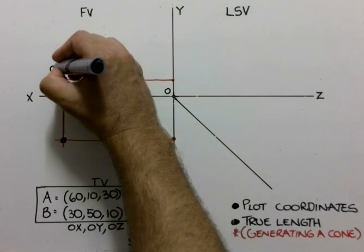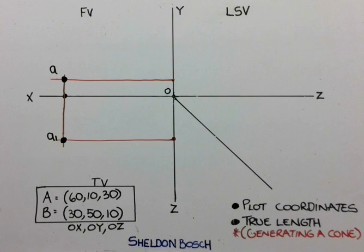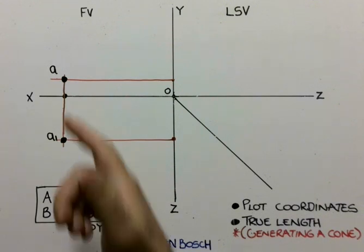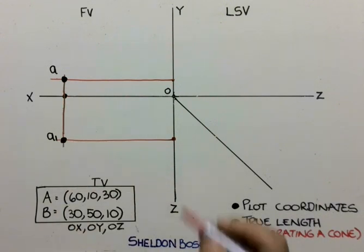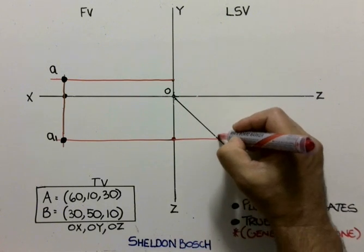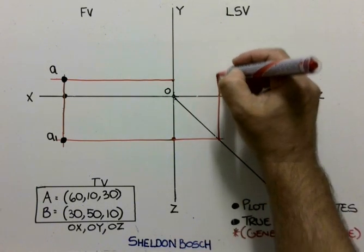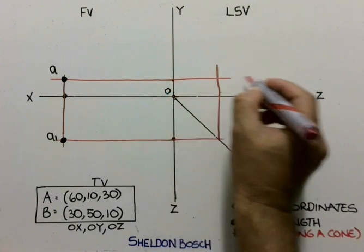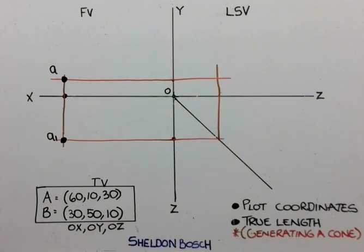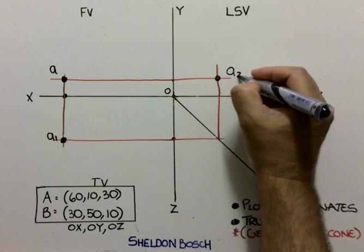So I now know that I'm going to be labeling them with a small representation, a small letter A and A1, and if I orthographically project this into my left side view, I'll then go across to my 45 and up. I'll then have this project right across, and where they intersect, I'll have my left side view representation, A2.